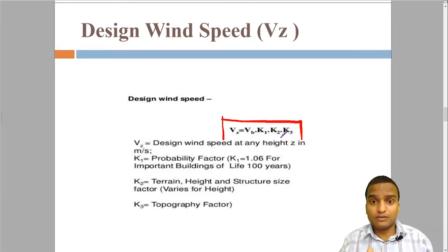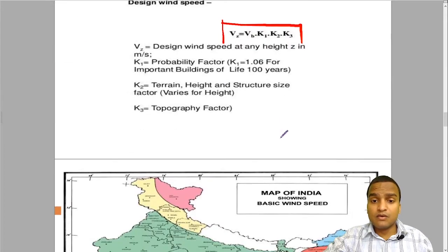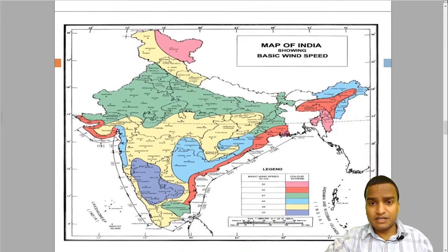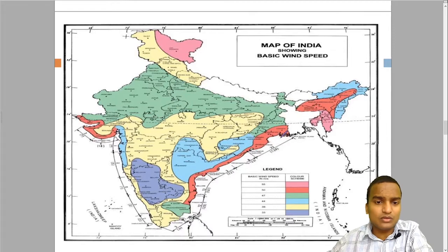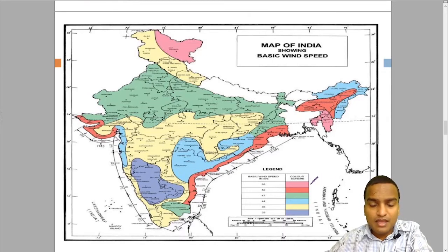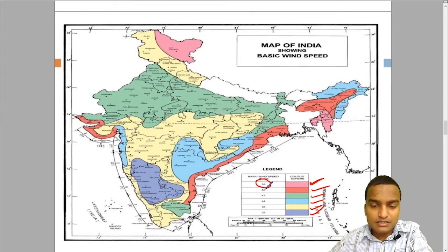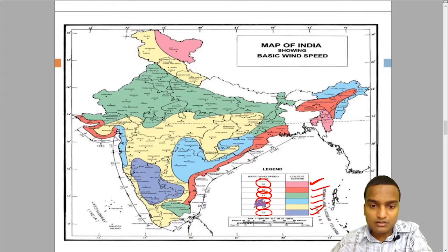What is VB? VB is the basic wind speed. This is the map of India showing basic wind speed provided in the IS code. The entire country has been divided into six zones of winds. For each zone, basic wind speed in meter per second is given: 55, 50, 47, 44, 39, and 33.